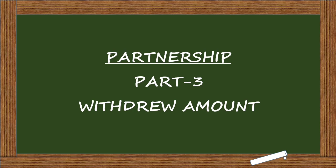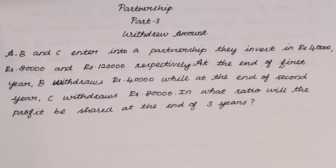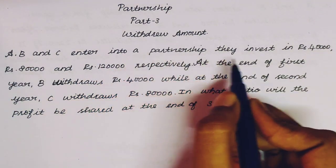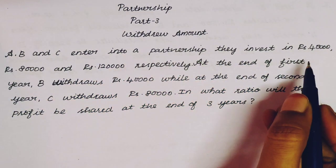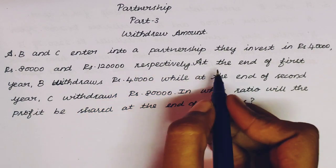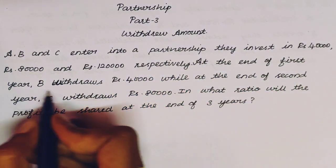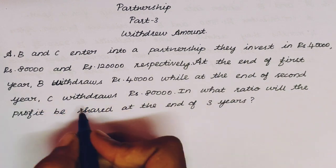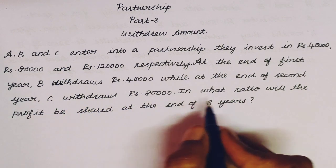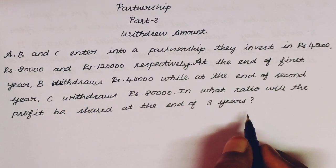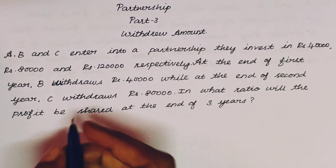First question: A, B and C enter into a partnership. They invest Rs. 40,000, Rs. 80,000 and Rs. 1,20,000 respectively. At the end of the first year, B withdraws Rs. 40,000, while at the end of the second year, C withdraws Rs. 80,000. In what ratio will the profit be shared at the end of 3 years?